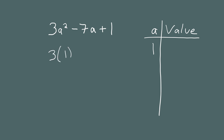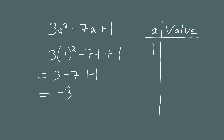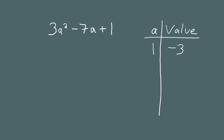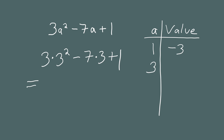Let's start by plugging in 1 for a. That gives us 3 times 1 squared minus 7 times 1 plus 1. Doing the arithmetic: 3 times 1 squared is 3, minus 7 times 1 is minus 7, plus 1 — combining these gives negative 3. So when a is 1 the value is negative 3. Now let's jump to 3 for a. We get 3 times 3 squared minus 7 times 3 plus 1. Remember: exponents before multiplication, so 3 times 9 gives 27, minus 21 plus 1 equals 7. When the input is 3 the output is 7.